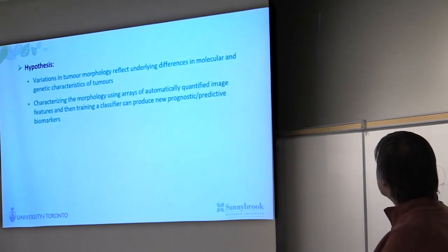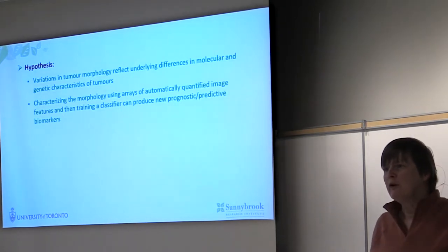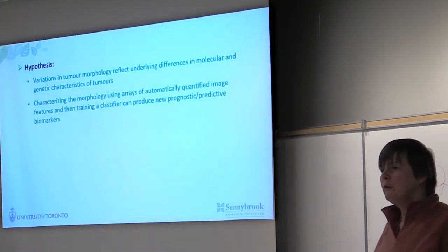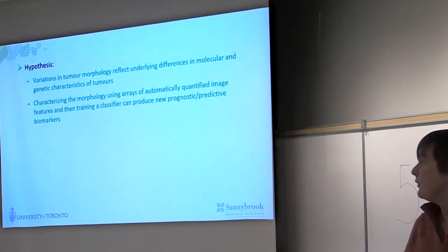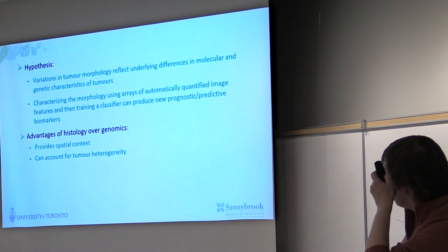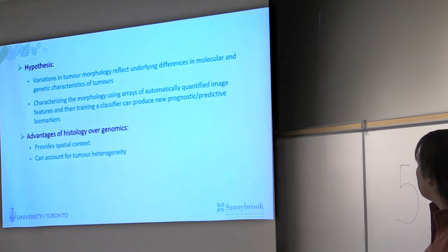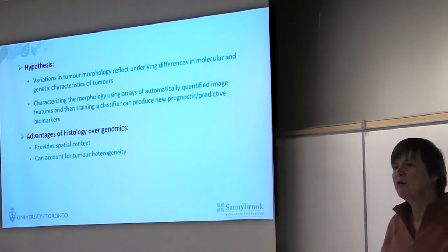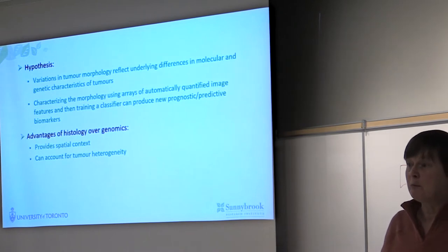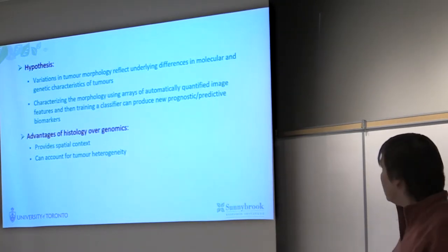My aim is to do prediction and prognosis from digital pathology. The basic hypothesis is that variations in tumor morphology are reflective of underlying changes in protein expression and genetic mutations, so there is information in that histology image that can help us with prediction and prognosis. The advantage over genomics is that it provides spatial context over the entire tissue section and accounts better for tumor heterogeneity. Ideally, the very low and very high probability cases from digital pathology don't need extra genomics spending, while the middle cases can be better separated by combining pathology and genetic information together.